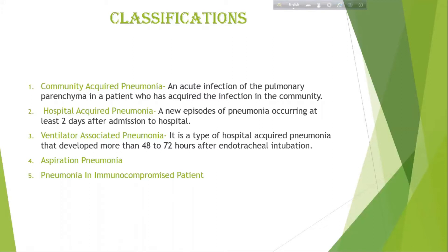Ventilator-associated pneumonia: A type of hospital-acquired pneumonia that develops more than 48 to 72 hours after endotracheal intubation. Aspiration pneumonia: It occurs after basal surgery under general anesthesia, or in a semi-conscious or unconscious patient, due to aspiration of septic materials. Pneumonia in immunocompromised persons: Occurs in patients with long-term use of glucocorticoids or AIDS patients.